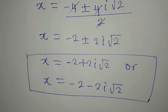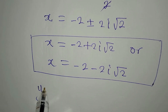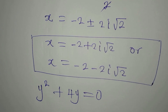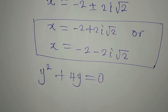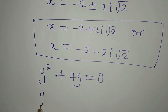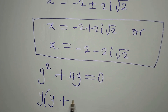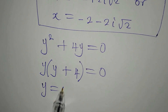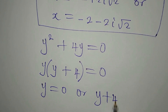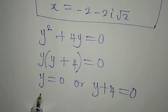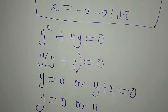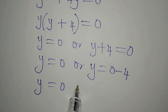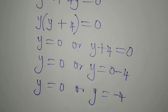Now for the equation we left out: y squared plus 4y equals 0. This quadratic has no constant term, so we can factorize directly. We get y times (y plus 4) equals 0. So either y equals 0 or y plus 4 equals 0, meaning y equals 0 or y equals negative 4.